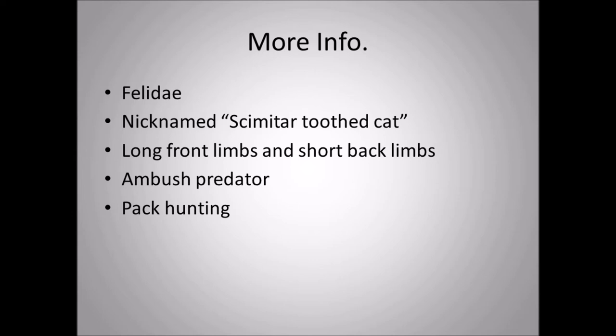Homotherium would be an ambush predator — it is not going to chase its prey down. Even though those long front legs might suggest it could run fast over great distances, this animal would actually use short bursts of speed and wrestle its prey to the ground. It would use its front limbs to bring prey down and then use its teeth to bite at the neck area, targeting blood vessels, letting its prey bleed to death.